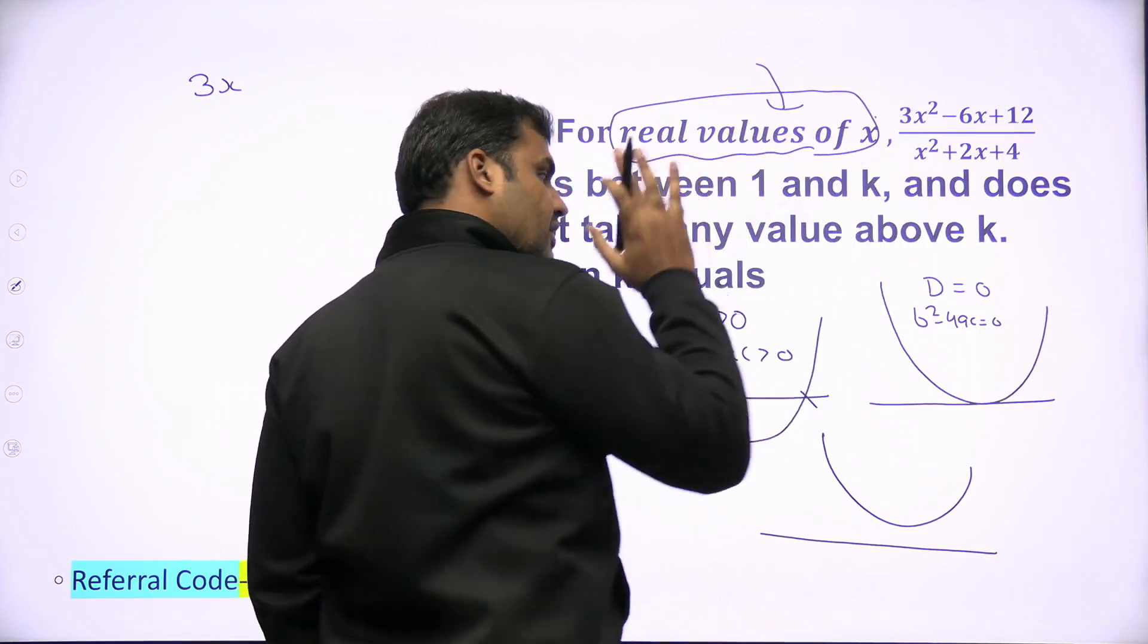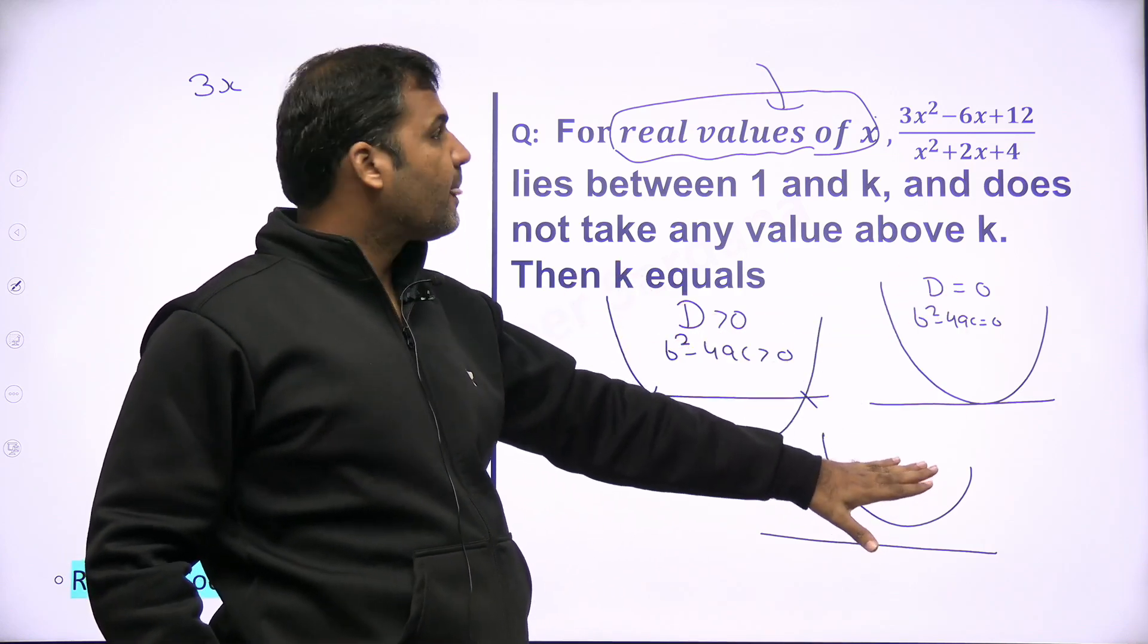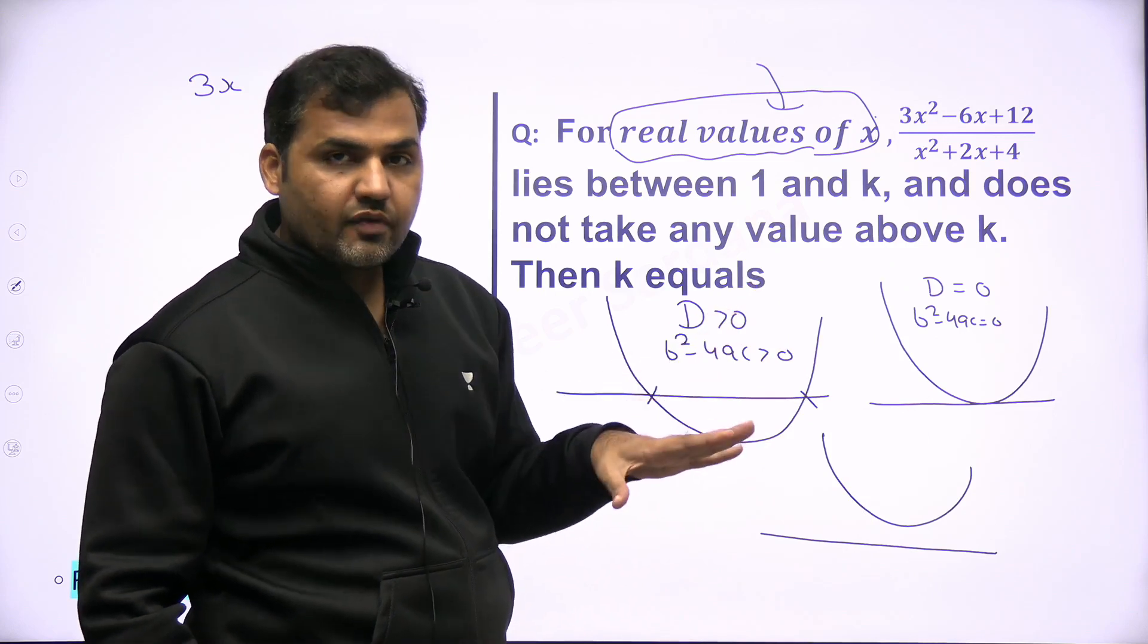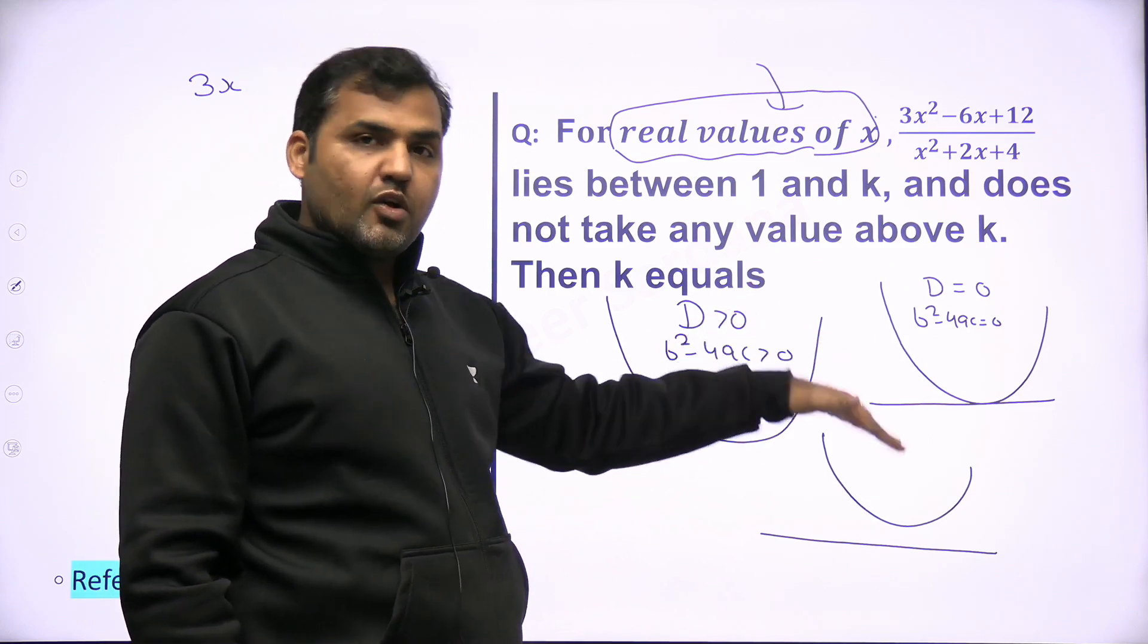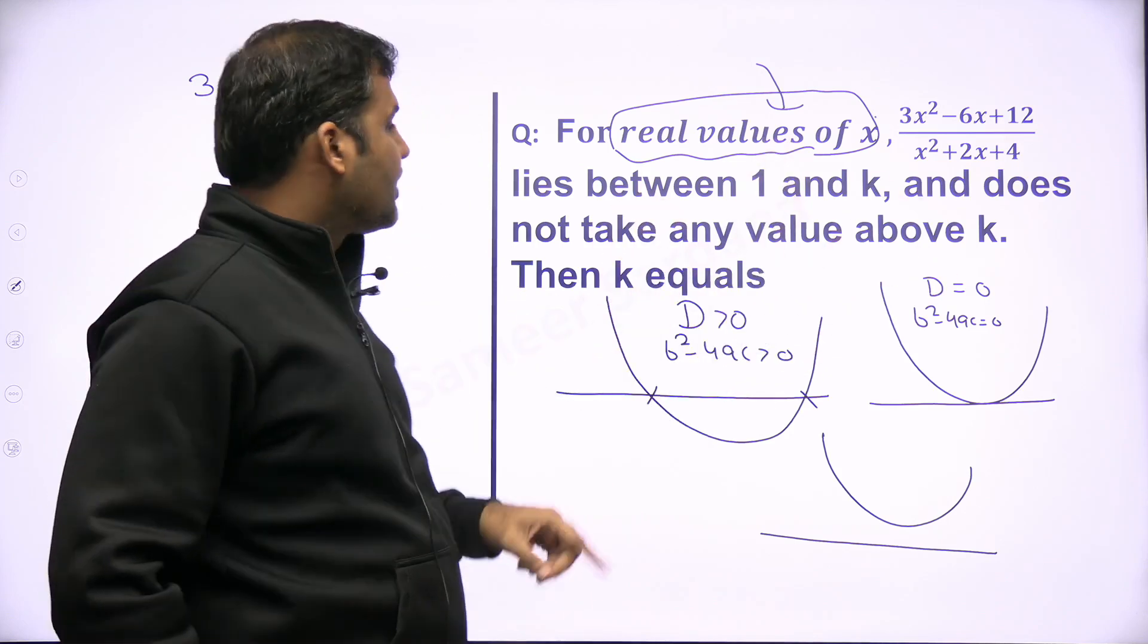Now in this particular equation, it says x is real, so either it will be this case or it will be this case. This cannot be the case. Depending upon the coefficient of x², parabola can be downward also, but these two conditions will still remain the same. So we will use this.